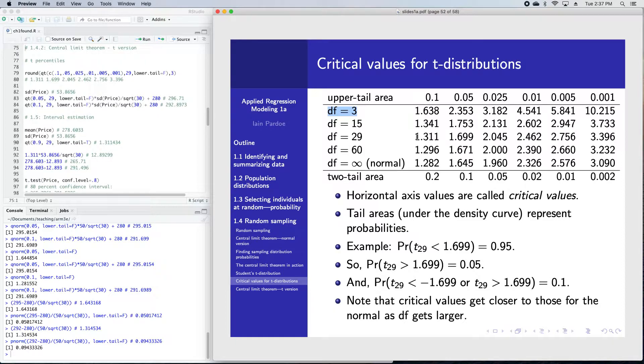Whereas to get a 0.1 upper tail area with degrees of freedom equals 29, you only had to go to 1.311. You have to go out to 1.638 to get an upper tail area of 0.1 when the degrees of freedom is only 3.